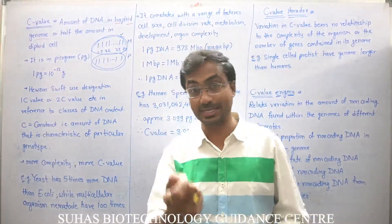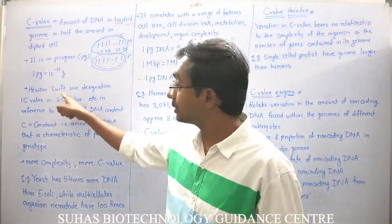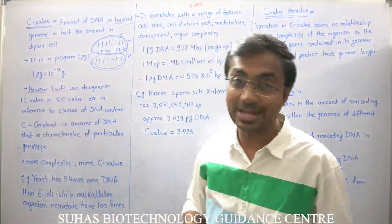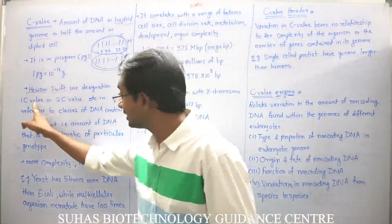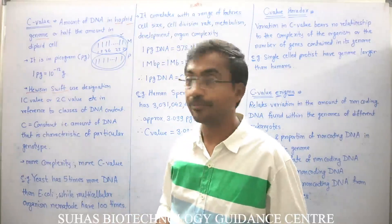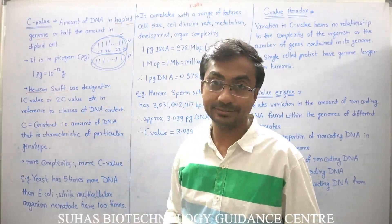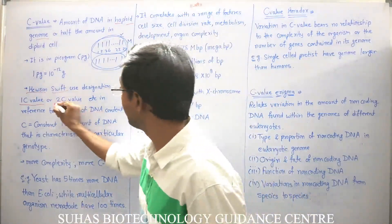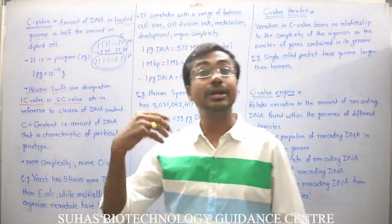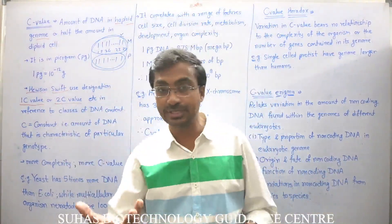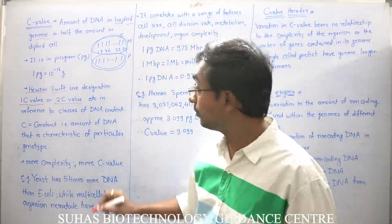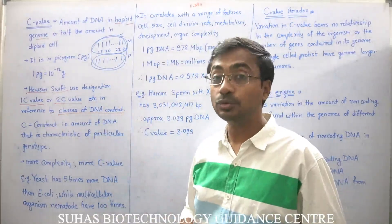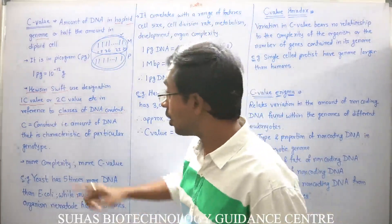C value is generally represented in picograms. Hewson Swift was the scientist who first gave the concept of C value. Swift used the designations 1C value, 2C value, etc., in reference to classes of DNA content. One C value means the haploid cell's DNA content; 2C value means the diploid cell's content; and for triploid, tetraploid, and multiploid cells, it is 3C, 4C, and so on.